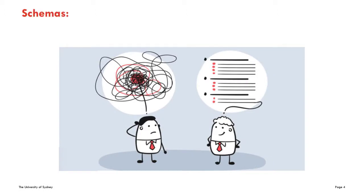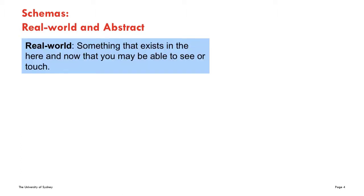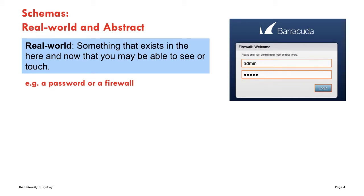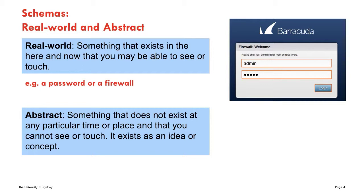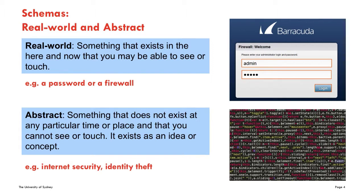Schemas are ways of organizing or structuring your writing. There are two main kinds: real-world and abstract. Real-world schemas are expressed in terms that refer to things that exist in the here and now that you may be able to see or touch. For example, a password and a computer monitor are real-world things. Abstract schemas refer to concepts which you cannot see or touch — for example, internet security and identity theft, while related to passwords and computers, are abstract concepts.